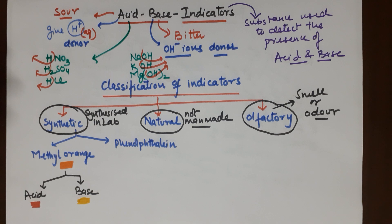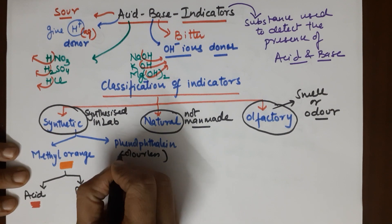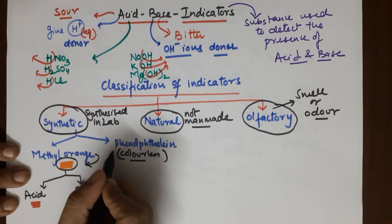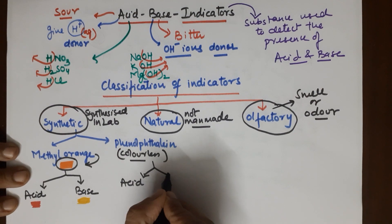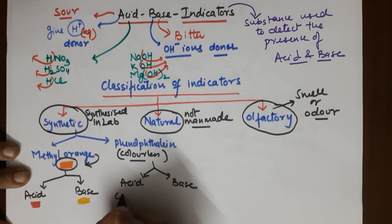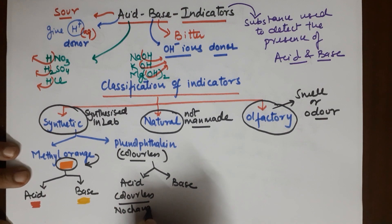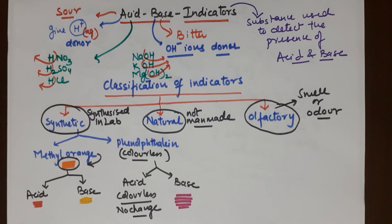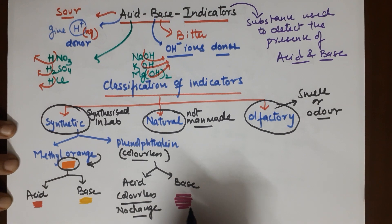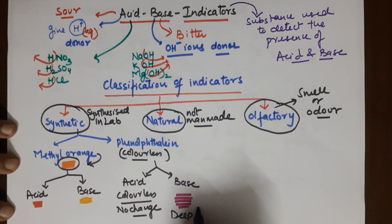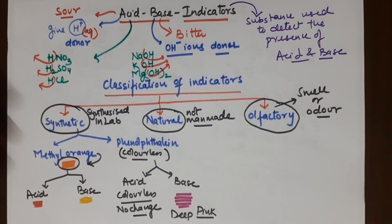The second synthetic indicator is phenolphthalein. Its original color is colorless. When added to an acid, there is no color change — it remains colorless. When added to a base, a deep pink coloration is observed, indicating the substance is basic in nature.